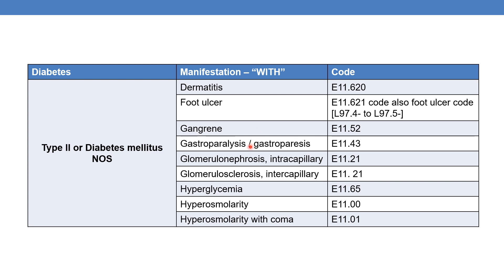For diabetes mellitus with gastroparalysis or gastroparesis, the code is E11.43. For diabetes mellitus with glomerulonephrosis intracapillary or glomerulosclerosis intercapillary, the code for both of them is E11.21.